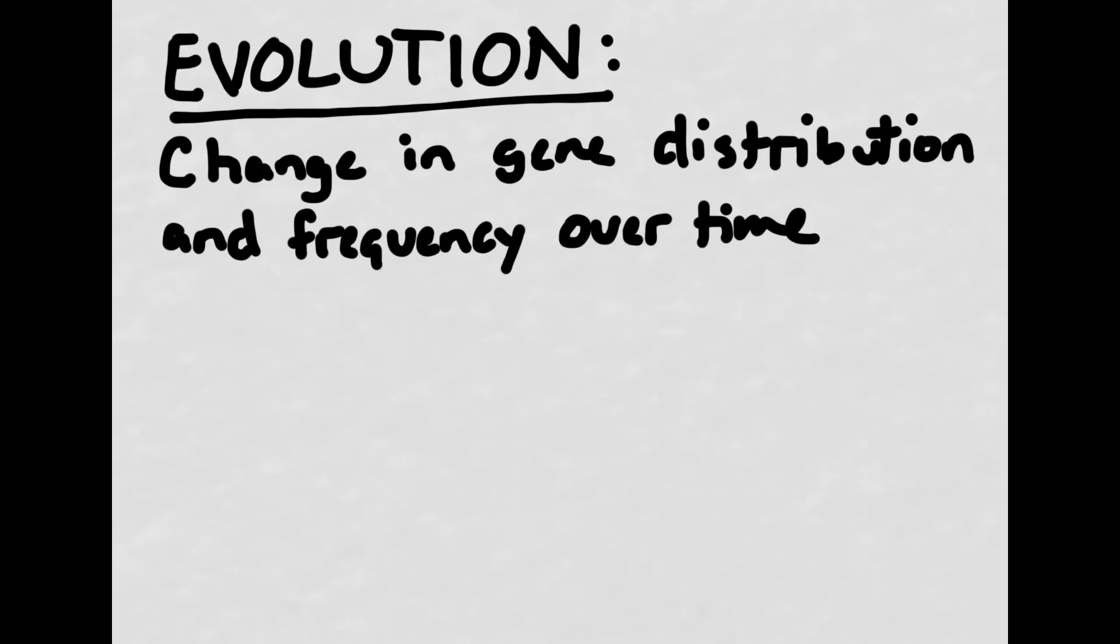However, before we can talk about sexual reproduction, we need to talk about this term, evolution. Evolution is the change in gene distribution and frequency over time. When we talk about over time, we're talking over many, many generations.